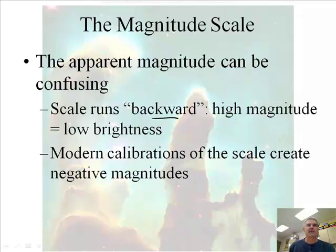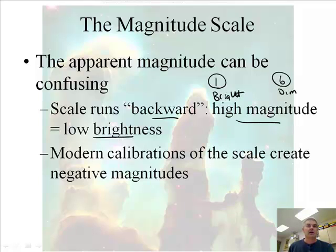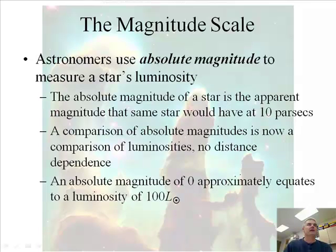First of all, the scale runs backward. High magnitude equals low brightness. I know it's kind of weird. So a one is bright, and a six is dim. Okay? Modern calibrations of these scales create negative magnitudes. There's actually ones that might have a negative two magnitude, and that would be very bright. Okay? You'll get the idea here in just a second.